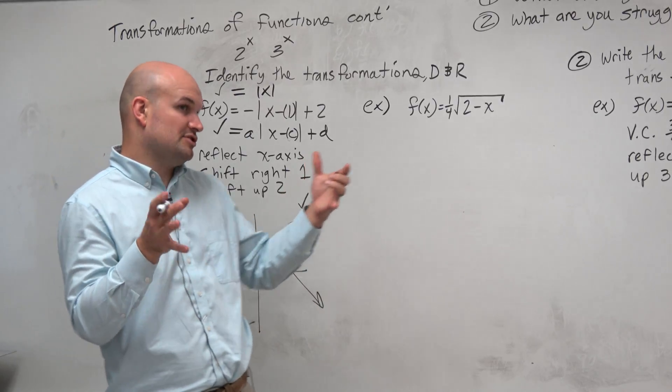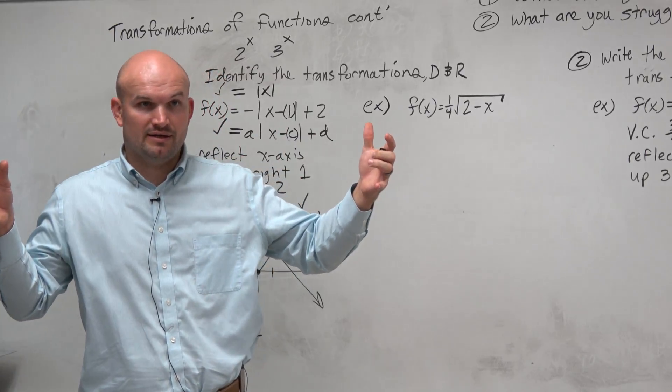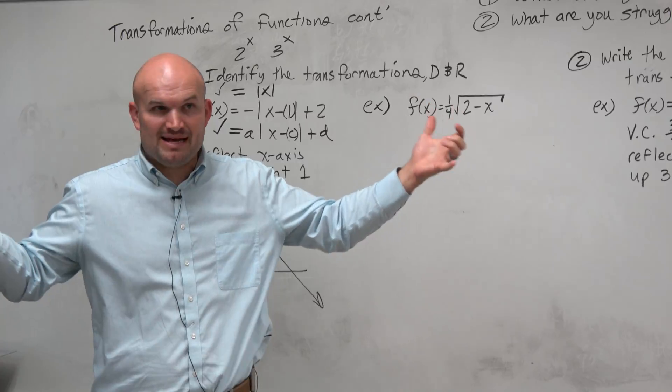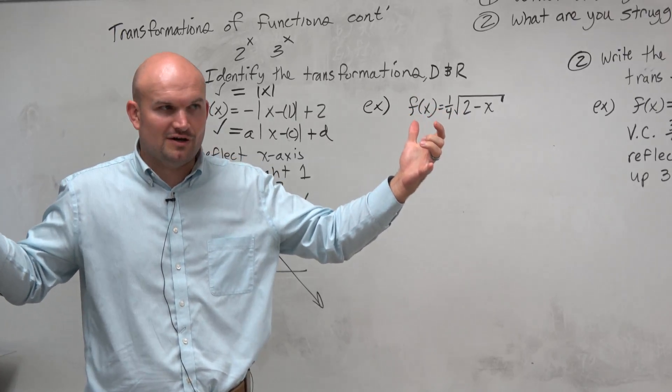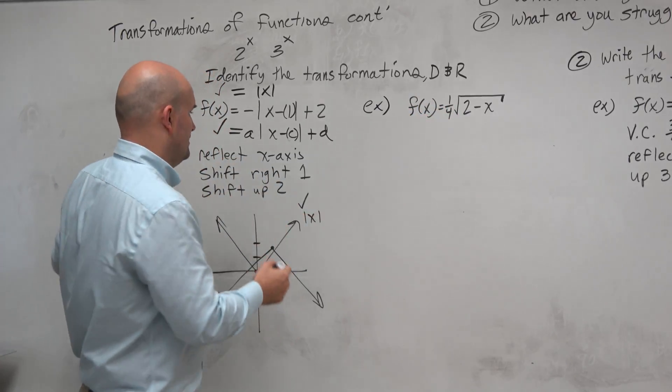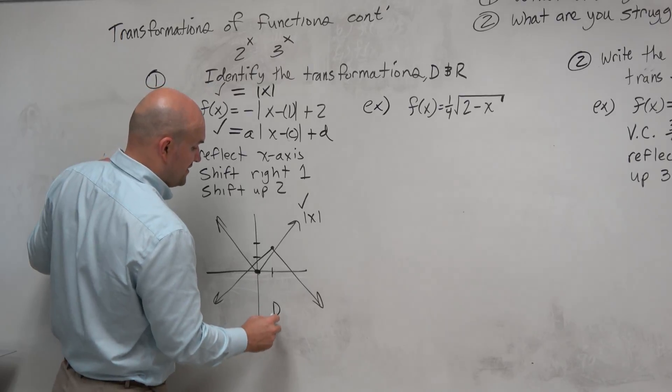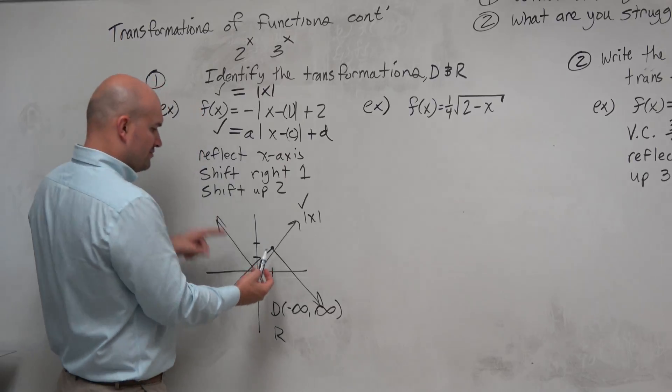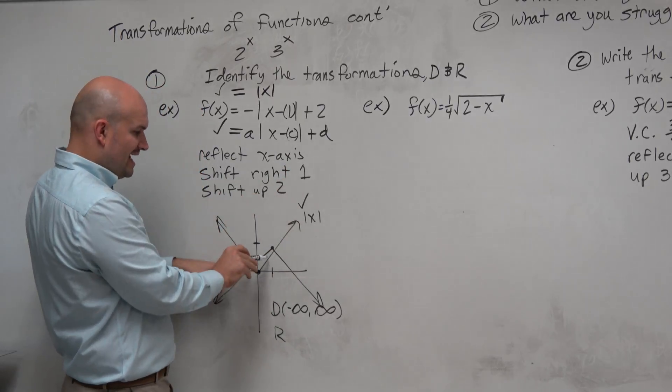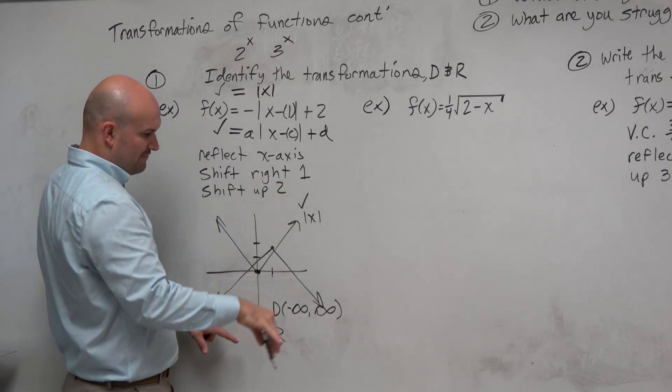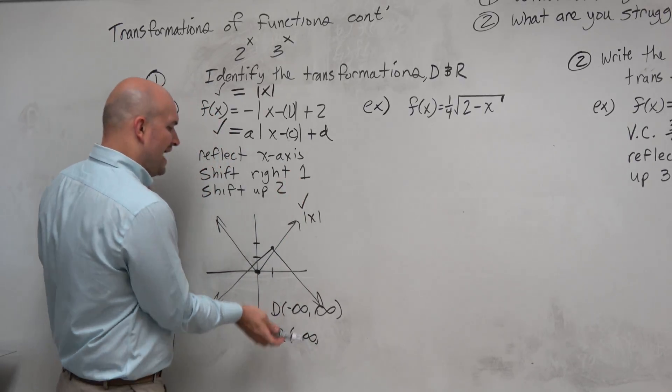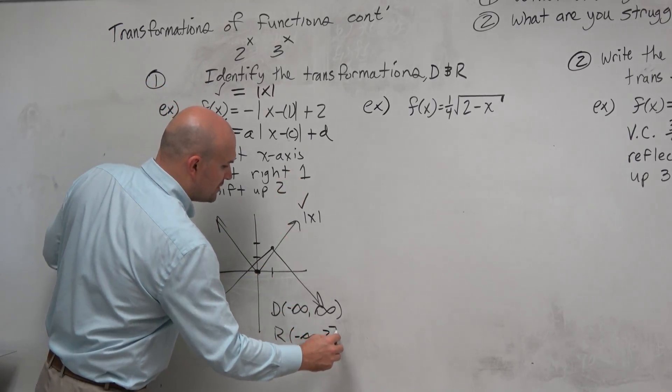So the domain of my original function was negative infinity to infinity. It doesn't really matter whatever I do. If the domain is negative infinity to infinity, it doesn't matter what I do to the function, the domain is going to still be negative infinity to infinity. However, the range was originally 0 to infinity. And as you guys can see, now that it got flipped down, the lowest it goes is negative infinity, and the highest the graph goes is 2, where 2 is included.